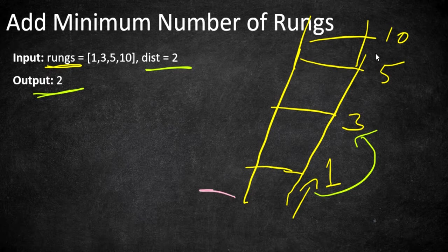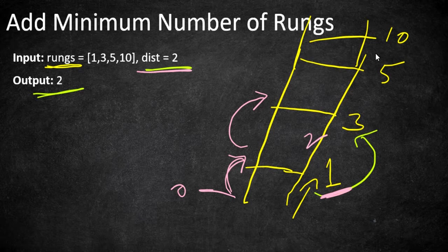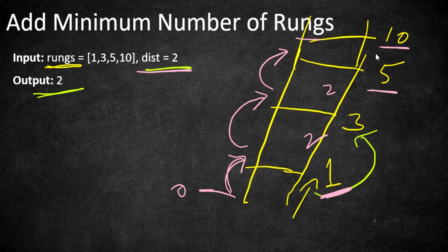Let's start climbing this ladder from the floor at distance zero. We can climb to the first rung since the distance between 0 and 1 is 1, which is less than 2. The same applies to the next rung at distance 3 — distance is 2, so it can be climbed. From 3 to 5 the distance is also 2, so that can be climbed as well. But at the last rung at distance 10, from position 5 to 10 the distance is 5, which we cannot climb.